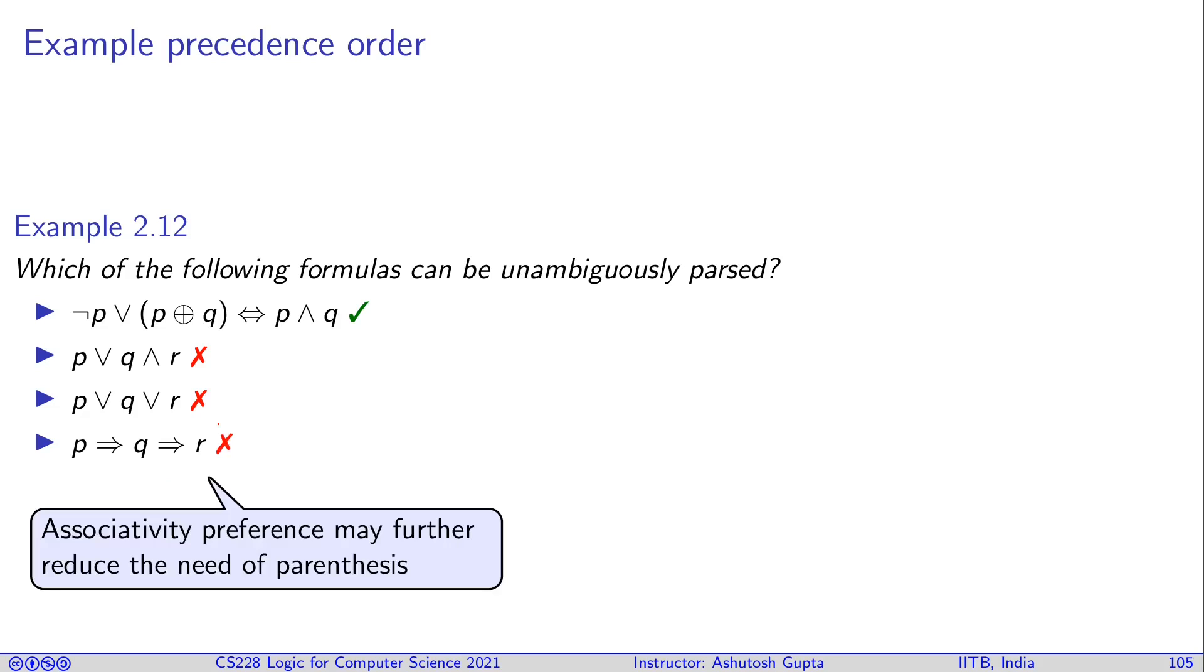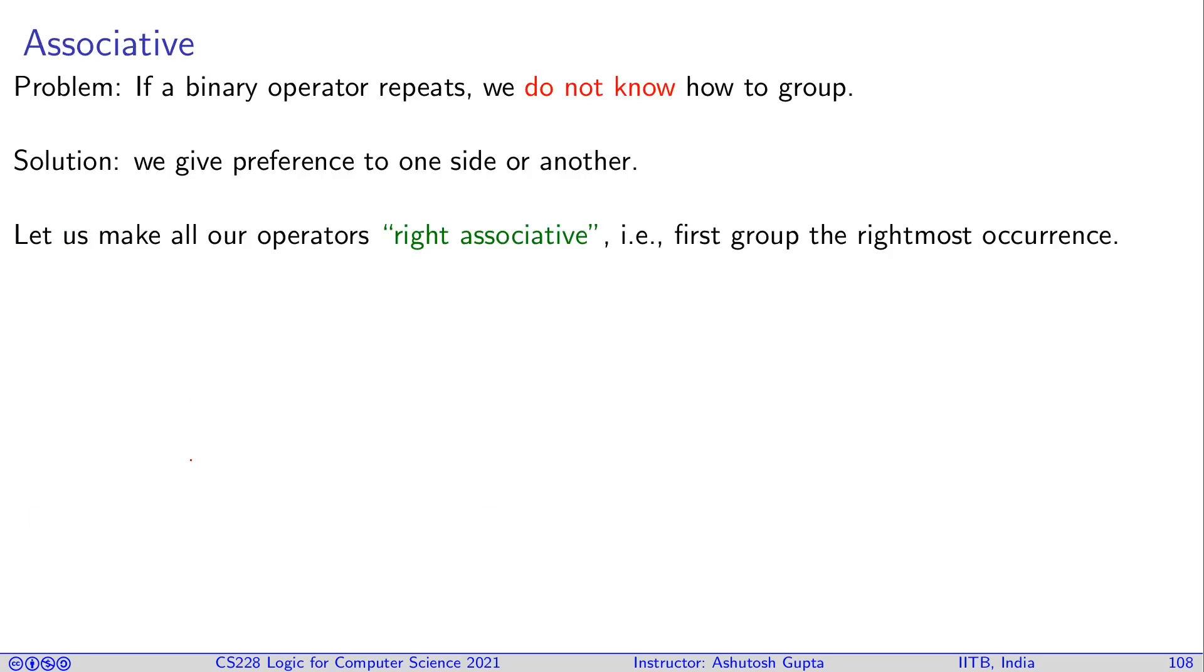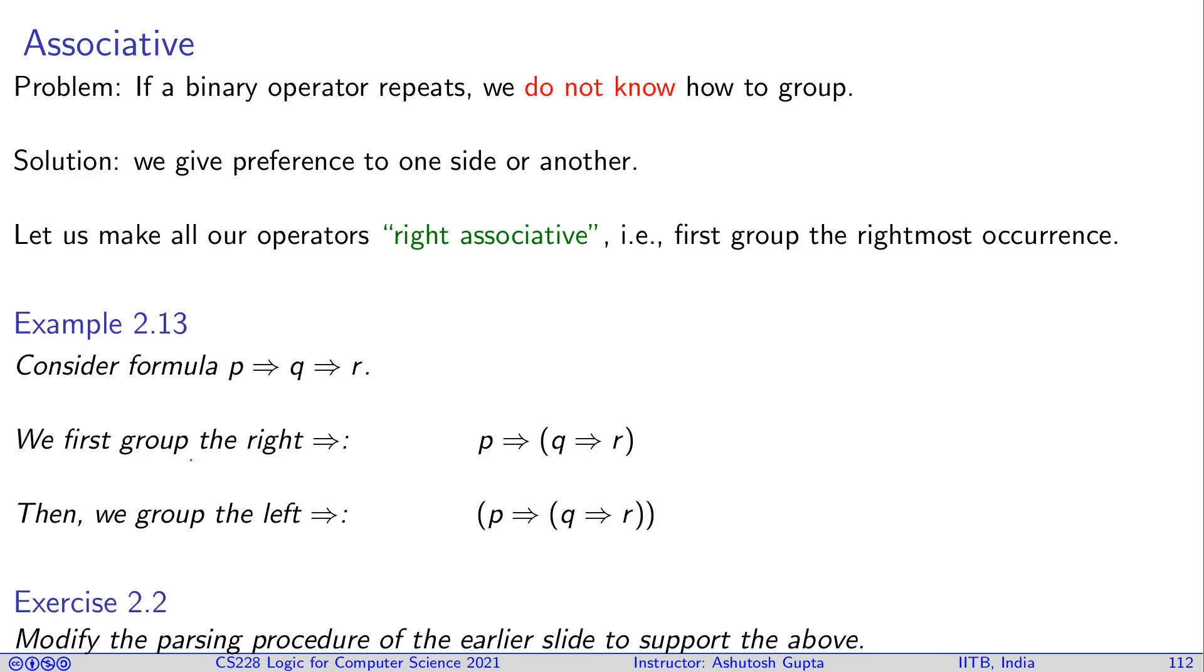So what we do in this case is that we call something called associativity preference, which may further reduce the need for parentheses. You basically say if you have a same binary operator occurring repeatedly, you say that leftmost will get the first parenthesis or rightmost one. You just choose a convention and stick to it. Most often people choose right associativity. Go and try to figure out how the algorithm will change to support this.